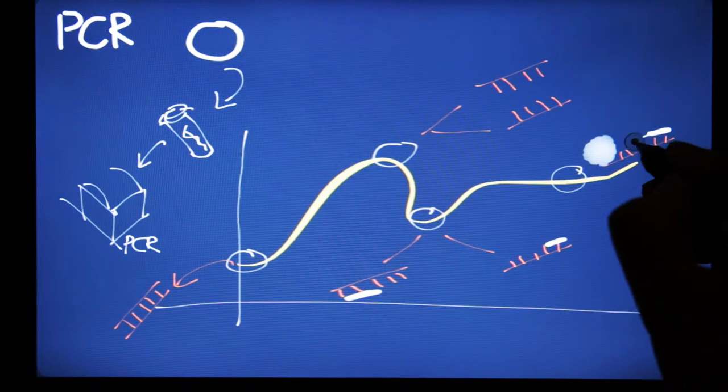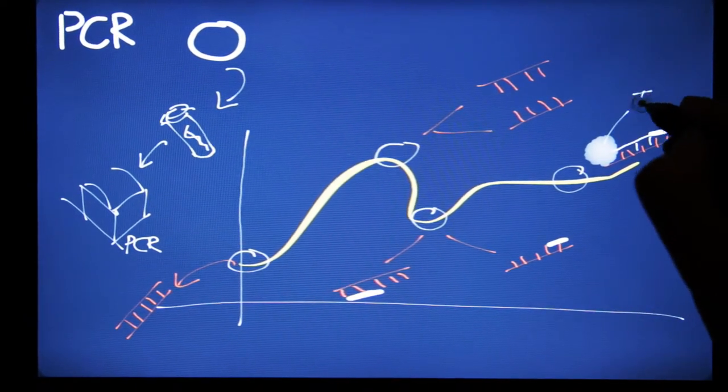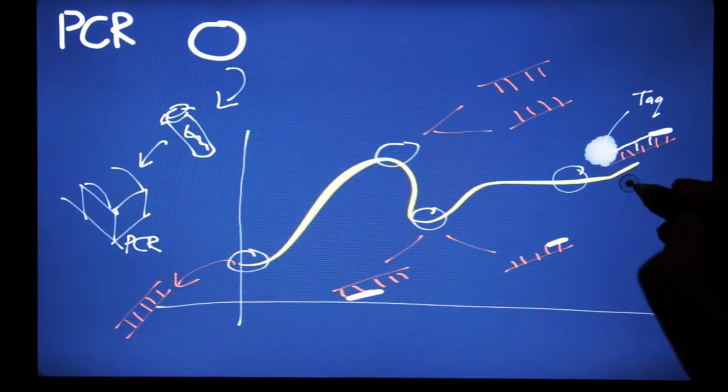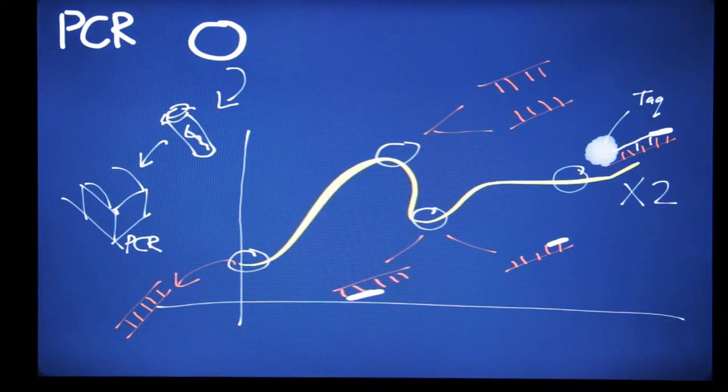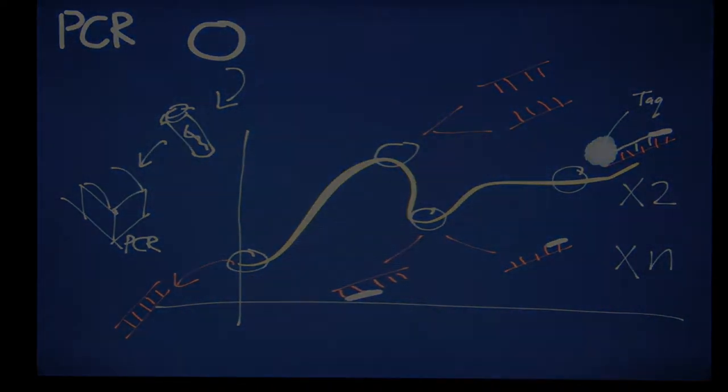The process will cycle back to step one and will repeat for 25 to 40 cycles. At the end of PCR, millions of copies of the target DNA sequence will be generated.